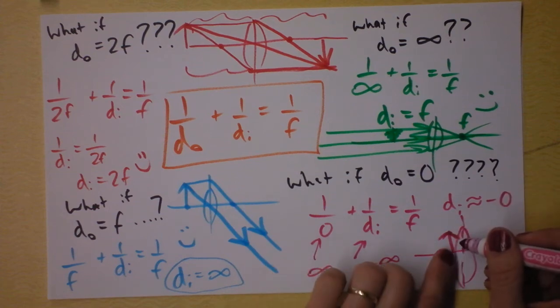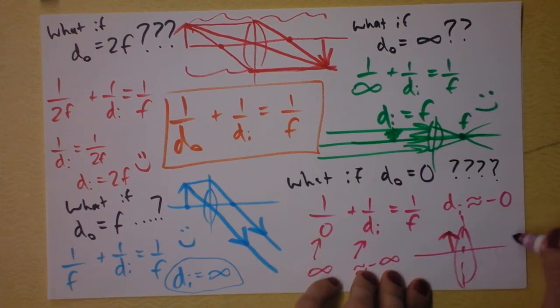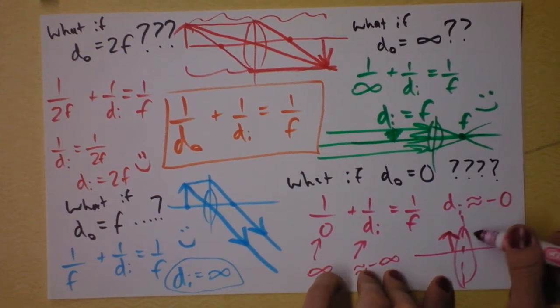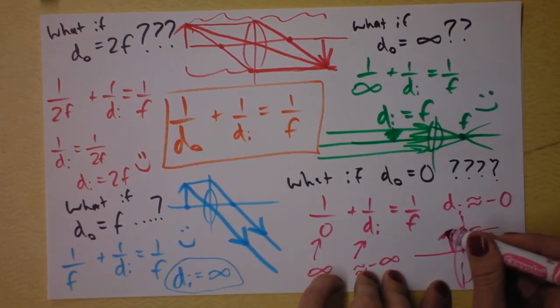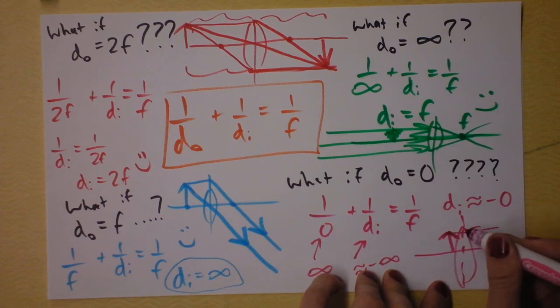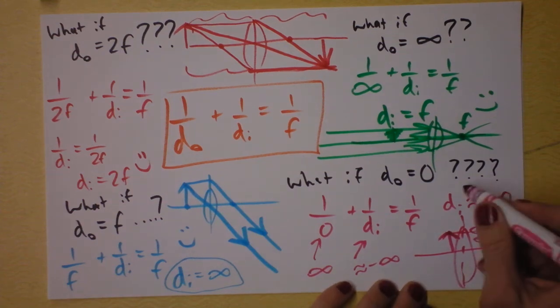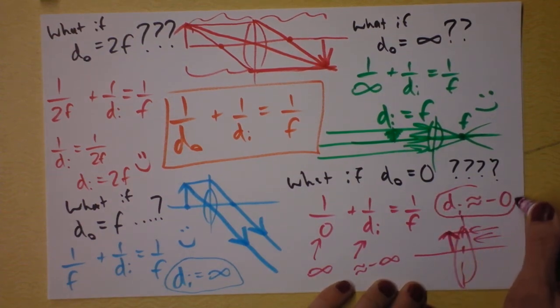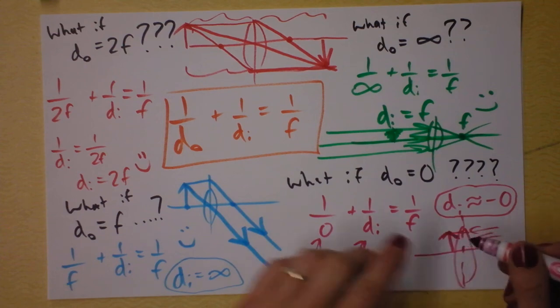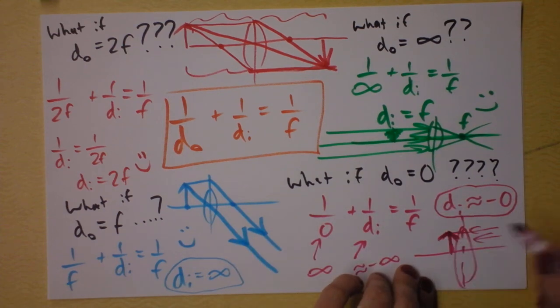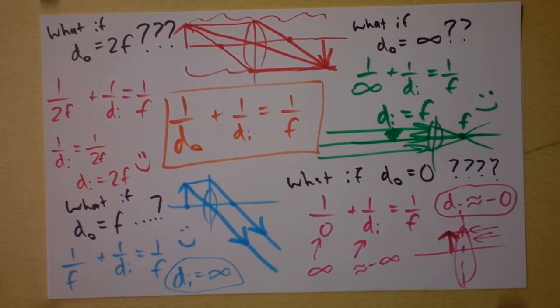When they're really close, is the image going to be upright? Yeah, I guess it's going to be a virtual image. So if you're looking through a converging lens, light's coming this direction, and it looks like it came from where it actually comes from. So it's almost like a plain piece of glass that you're looking through. Very interesting. So the object and image are just barely on the same side.